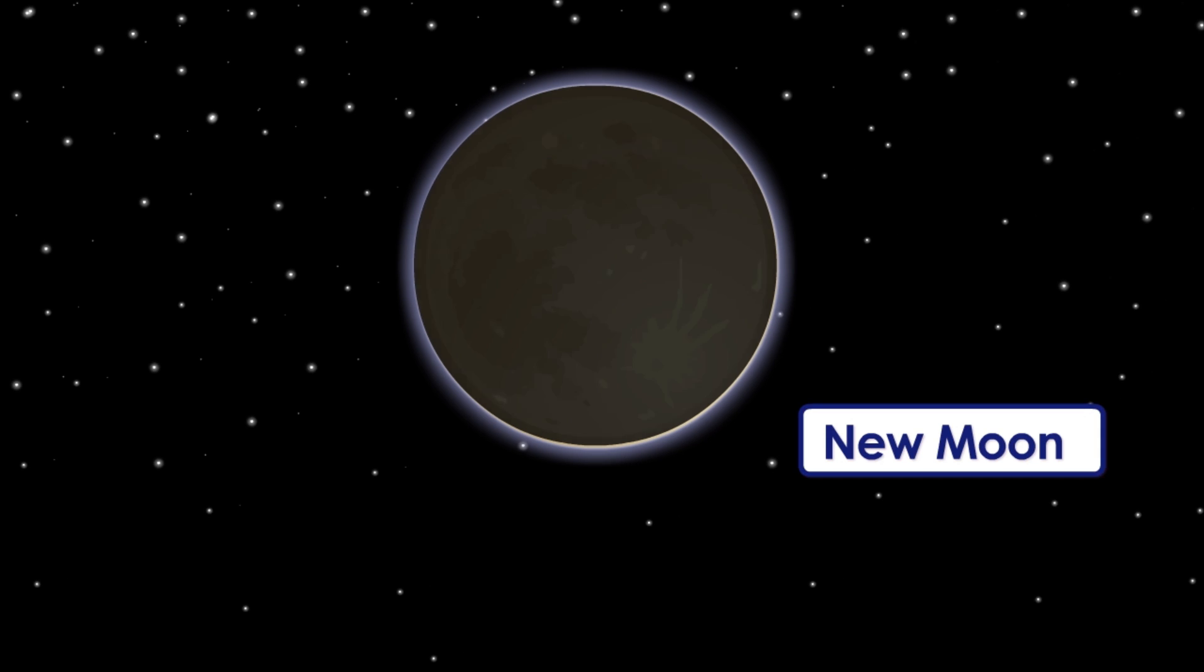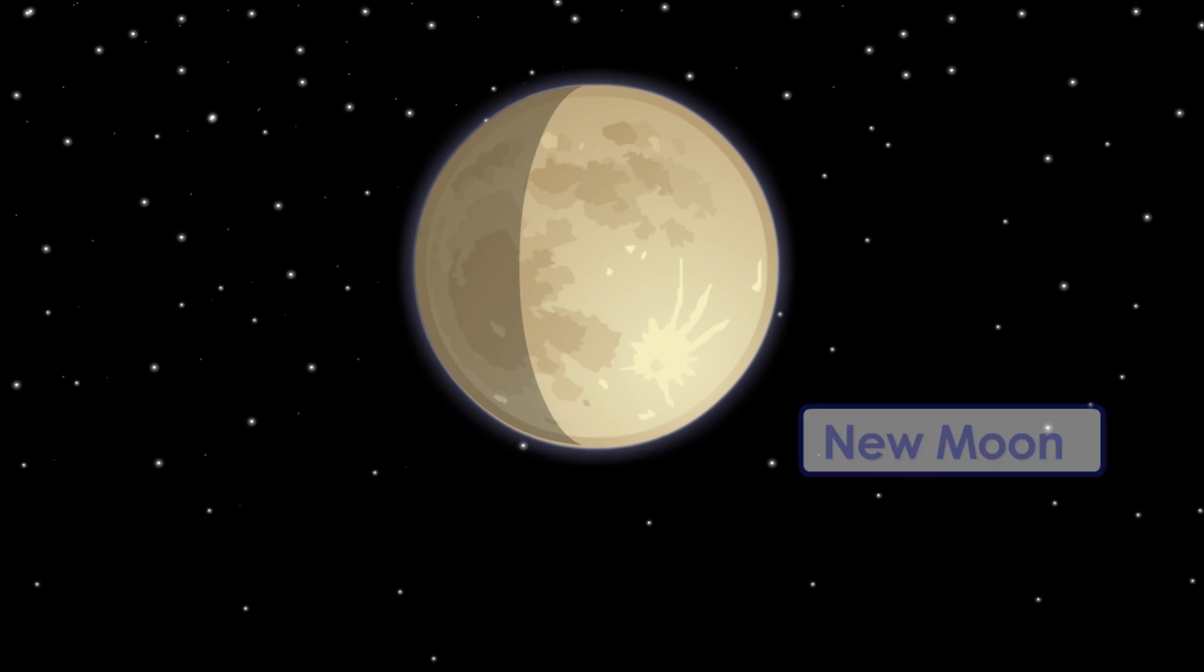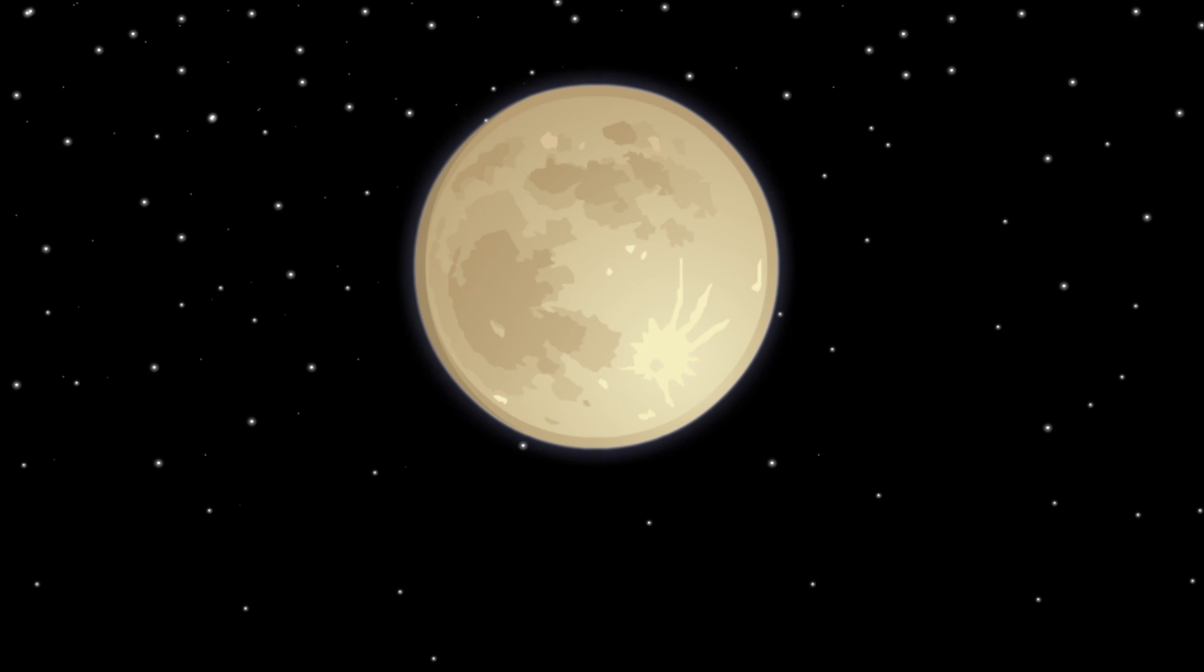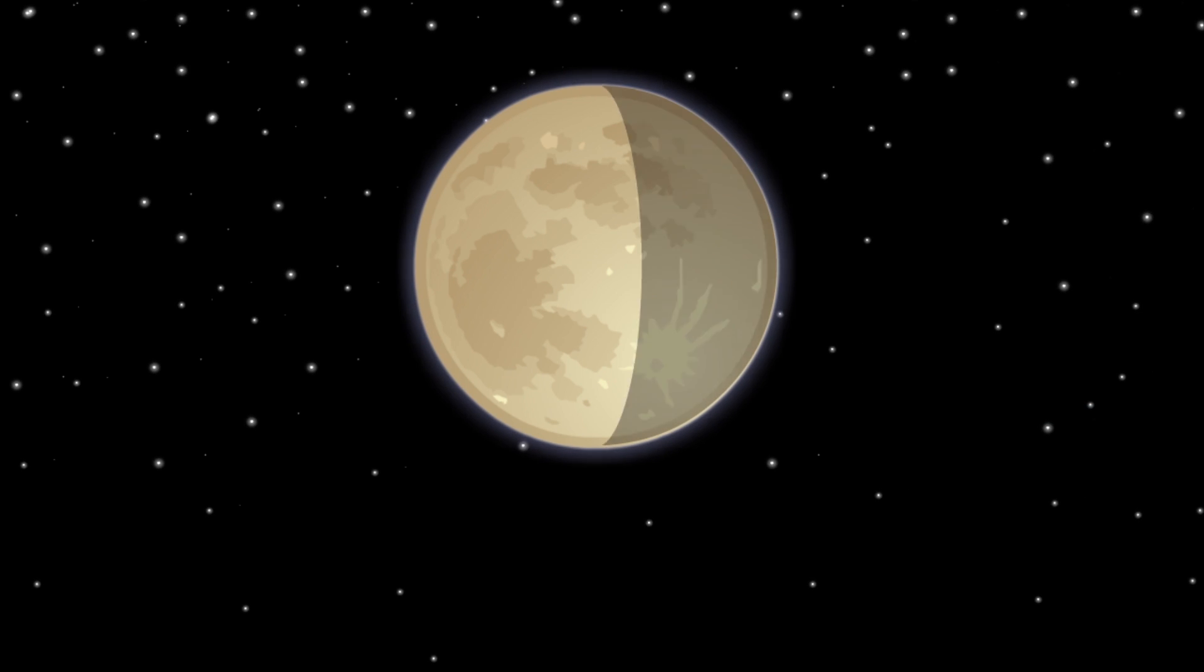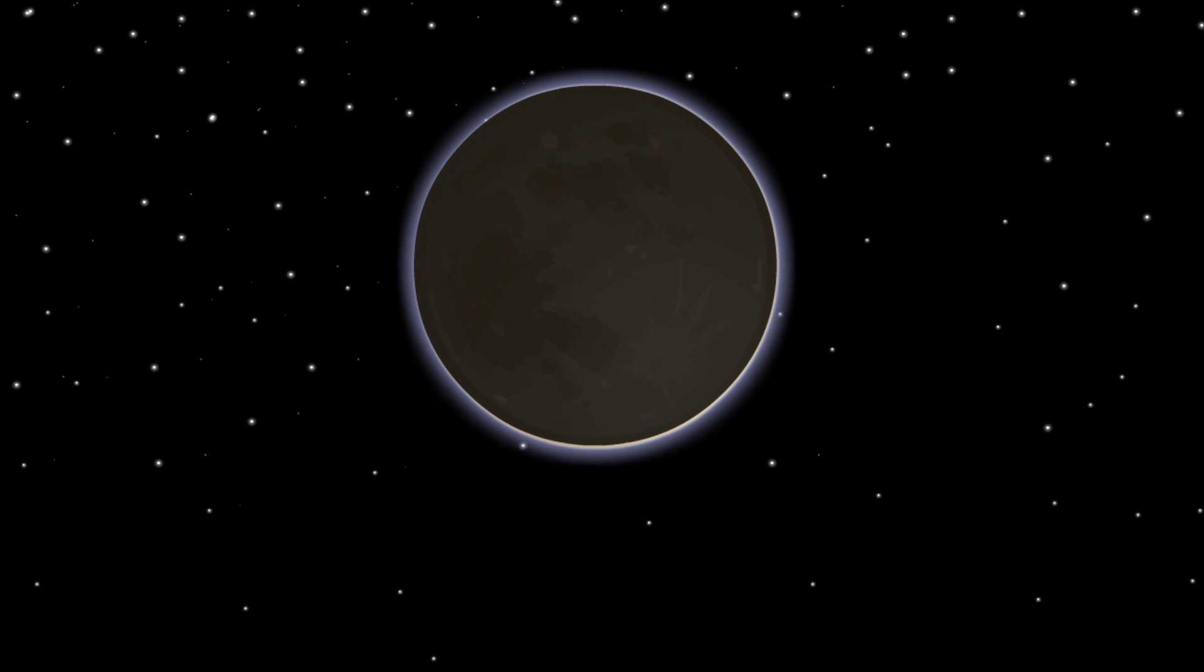First, we see the new Moon. And as the days go by, or better, the nights, we can see a part of it progressively lit up until it becomes a full Moon. And then, that lit up part starts to disappear until it becomes dark once again.